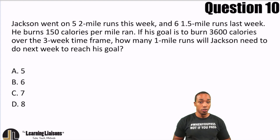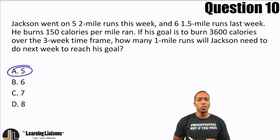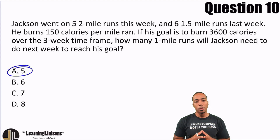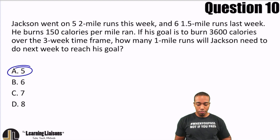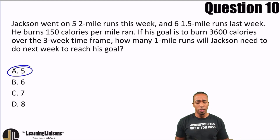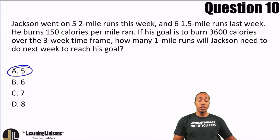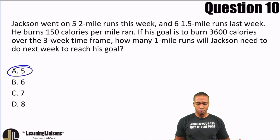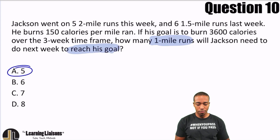So let's go ahead and get started here. The answer to this question is five. Let us know if you like this problem because we would love to include more of these quantitative reasoning types of problems. Here's what we need to know — what are we talking about and why? Well, we're talking about this person named Jackson who is running and he has a calorie goal, and we are trying to figure out how many miles he has to run to reach that calorie goal.